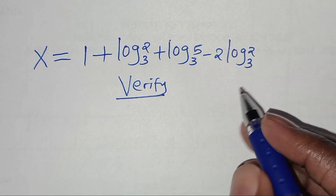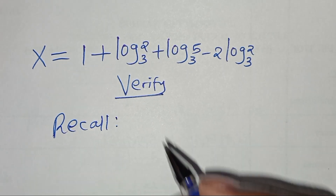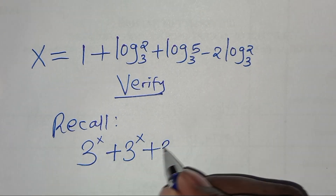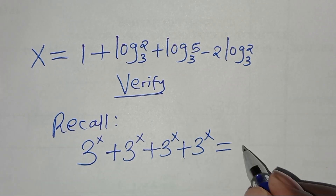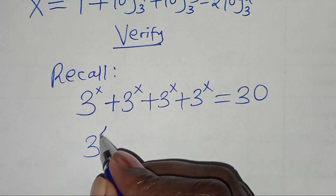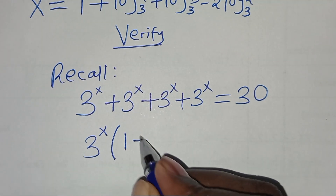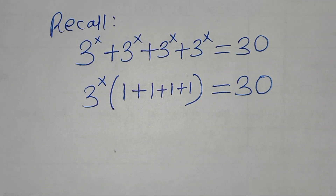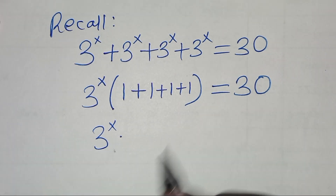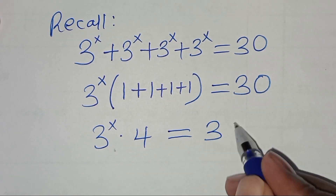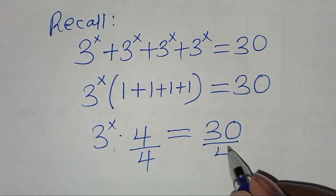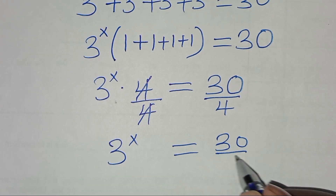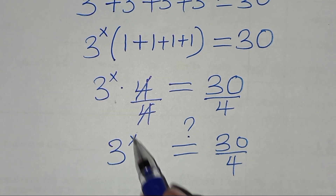So the next step is to verify that this value of x satisfies the equation. Recall we have 3 to the power x plus 3 to the power x plus 3 to the power x plus 3 to the power x, which is supposed to give us 30. Factoring out 3 to the power x gives 3^x times 4 equals 30. Dividing both sides by 4, we get 3 to the power x equals 30 over 4. Let's substitute the value of x and check if this is true.